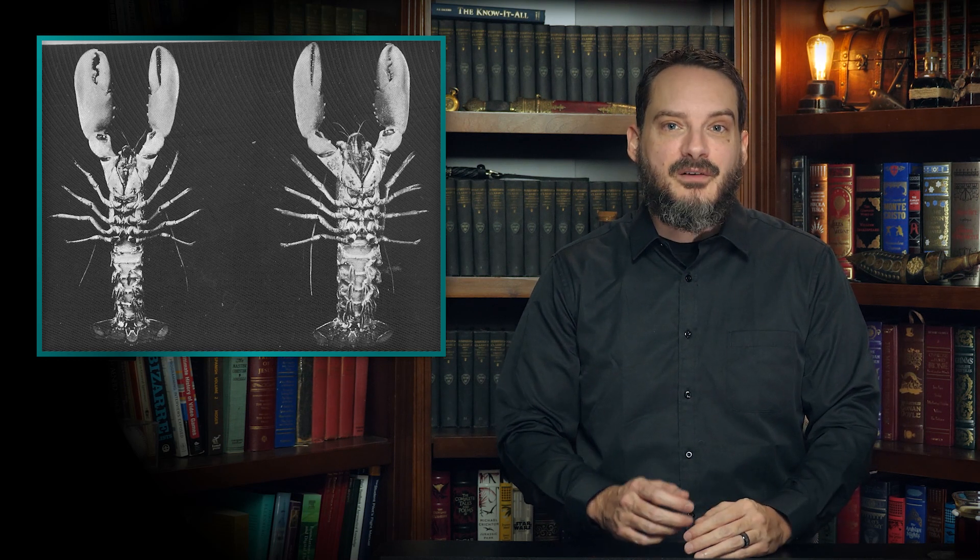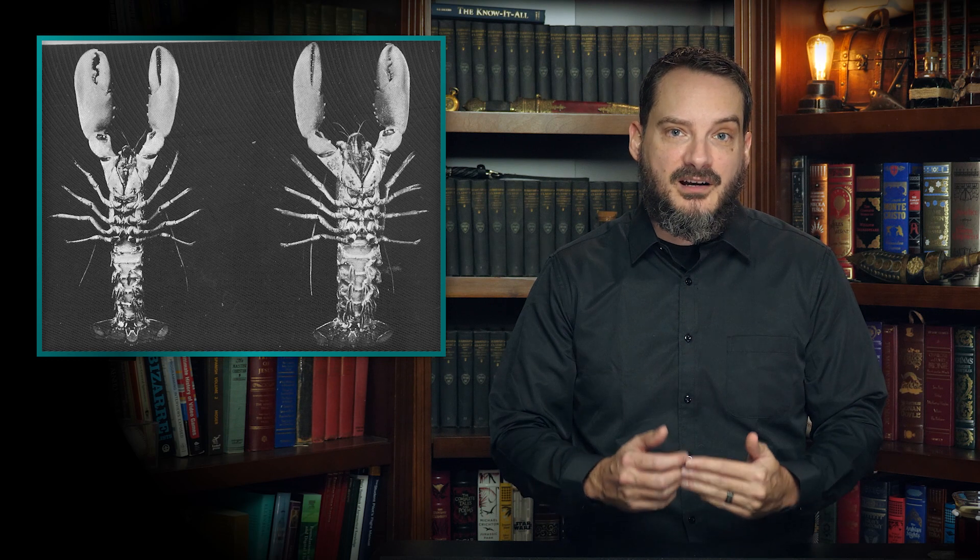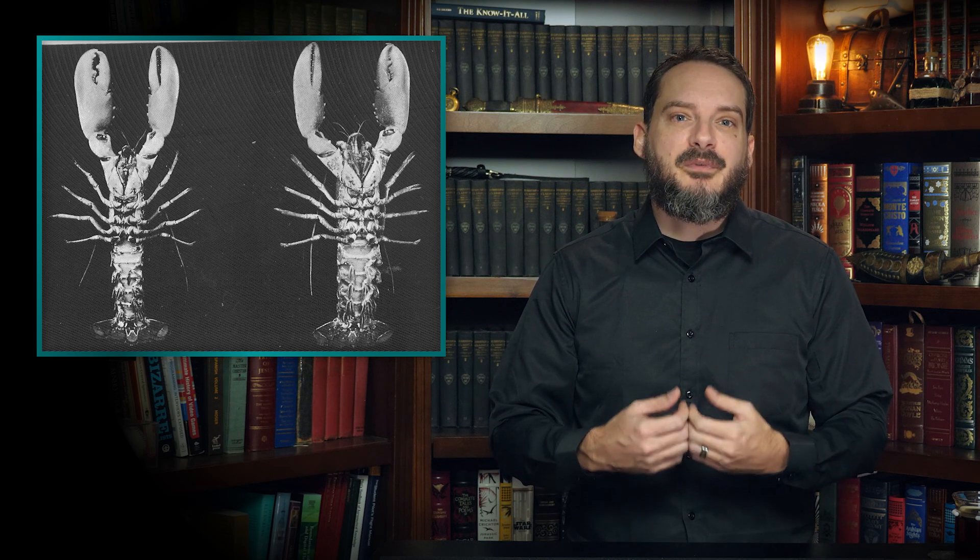Humans grow through childhood and adolescence until they reach a certain size, after which they usually do not grow any bigger, at least not vertically. A lobster's body, however, never stops growing. Lobsters grow in size during a process called molting, in which they shed their hard exoskeletons from claws to tail before growing a new one around a bigger body.